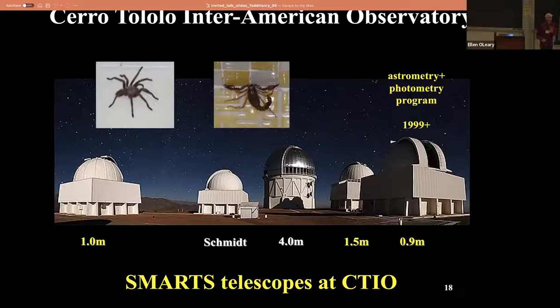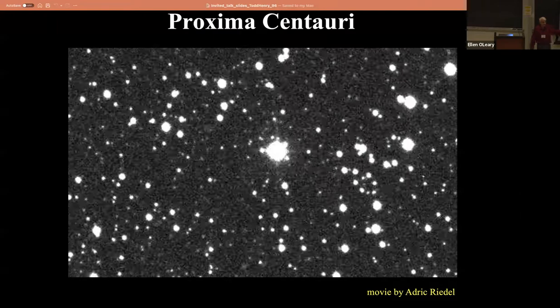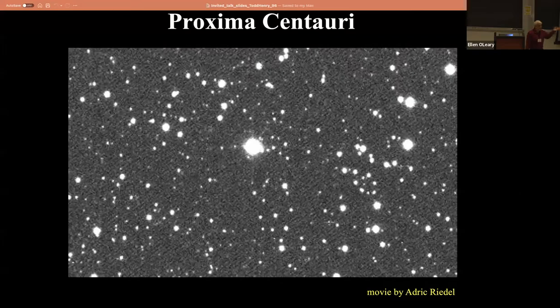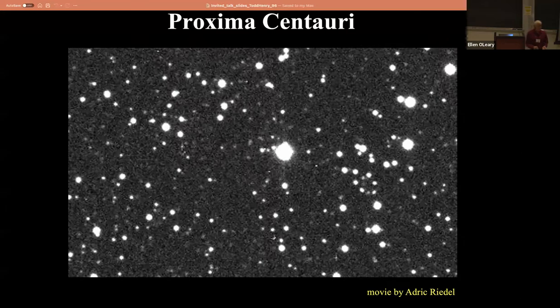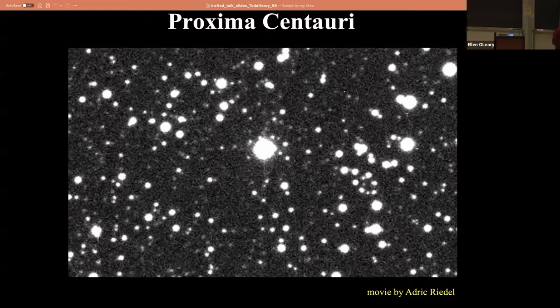We've got a lot of data coming from there. This is a picture of Proxima Centauri - actually several pictures taken over 10 years of the proper motion of a star, an actual movie of stars moving in the sky. This is the actual data. Can anybody tell me why the stars are flickering in the background?